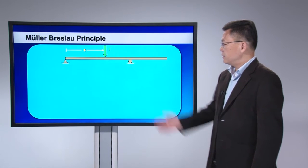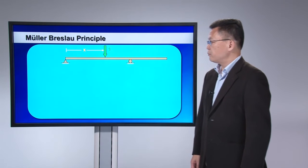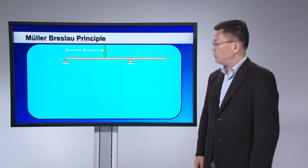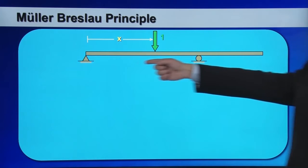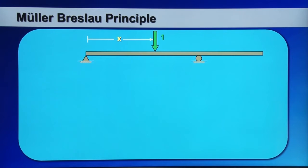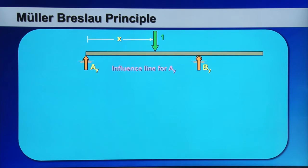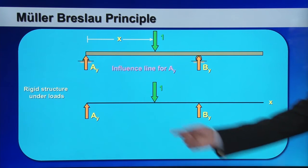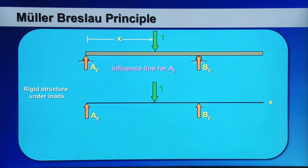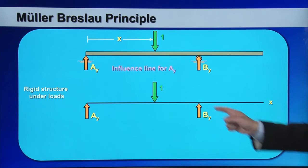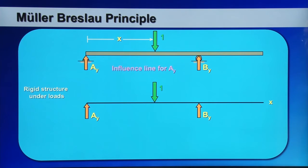Let me illustrate the virtual work principle using this example. I have a simply supported beam with one side overhang, and I want to find the influence line for the reaction force at the left end, Ay. I put all the external forces acting on the structure, which include Ay, the reaction force By, and the downward unit force.